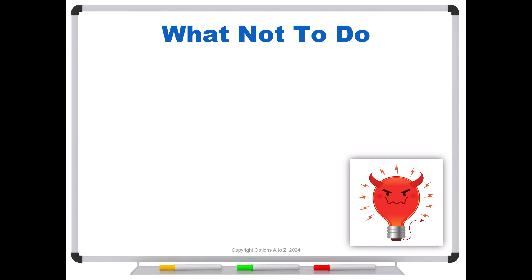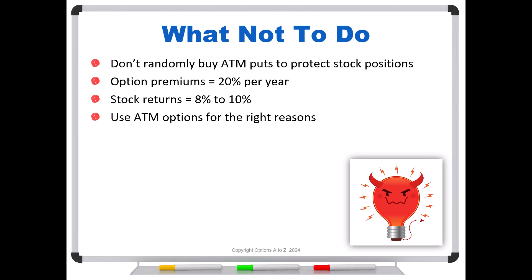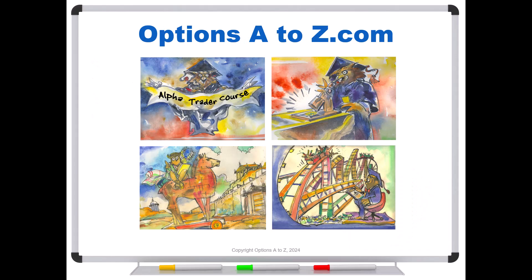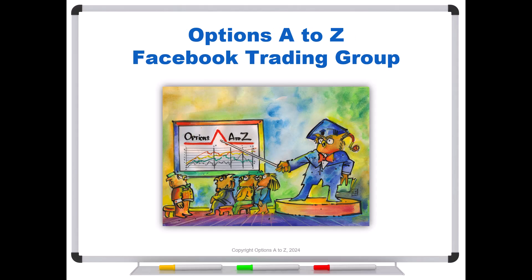So even though at-the-money options convey the most information, that doesn't mean you always choose them — remember, they're tools. Don't just randomly buy at-the-money puts to protect stock positions. Part of the reason is that option premiums usually annualize out to about 20% per year, whereas stock returns are in the order of about 8% to 10% per year. Instead, use at-the-money options for the right reasons — use them for the times that you feel you need to remove the most uncertainty. For anyone who'd like to learn more about the art and science of options trading, please check out the Alpha Trader course, Strategy Lab, and a candlesticks and technical analysis course at optionsAtoZ.com. Also please join us on Options A to Z's Facebook trading group — you can find a link in the description below.